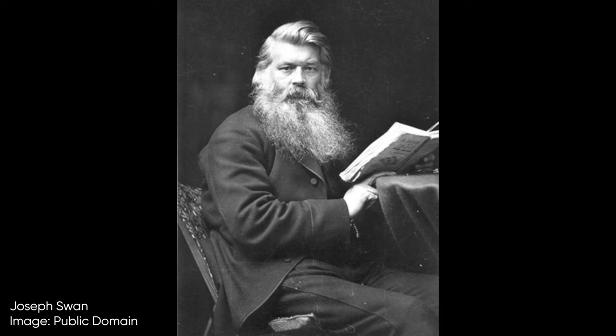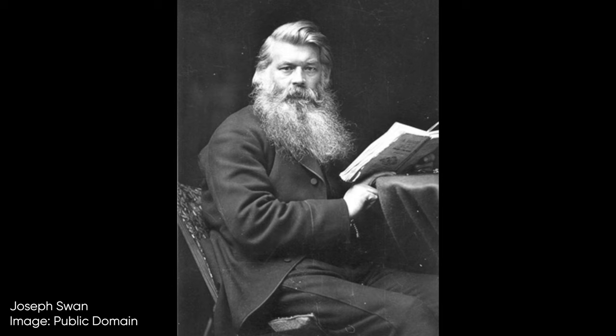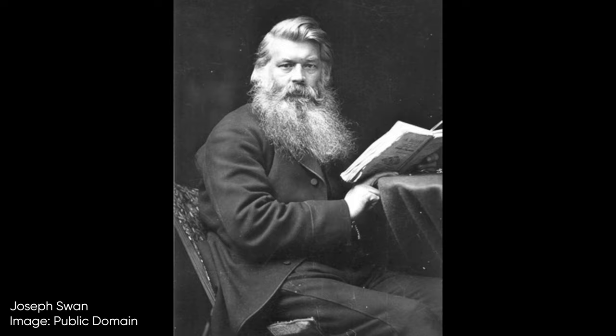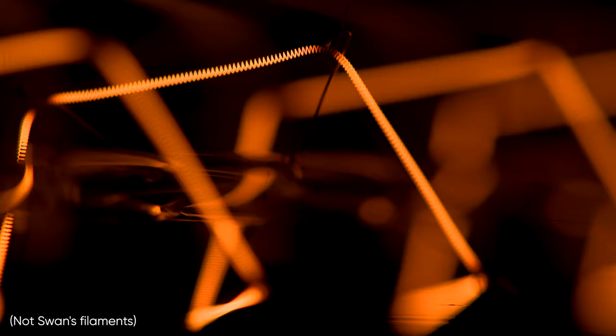In 1850, British physicist and chemist Joseph Swan began working on a lower cost lamp that used carbonized paper filaments. He demonstrated a working device by 1860, but the lack of a good vacuum prevented his design from having a long lifespan. In 1863, Swan demonstrated a vacuum pump in an attempt to solve this problem.